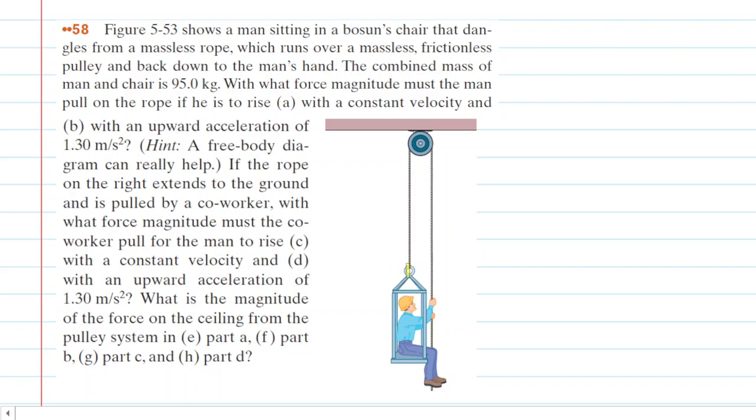The first thing to notice in this arrangement is that there are two contact points between the rope and the man-chair system. For example, the rope is contacting that system here, but it's also contacting that system here. So those two contact points will become important because as the man pulls